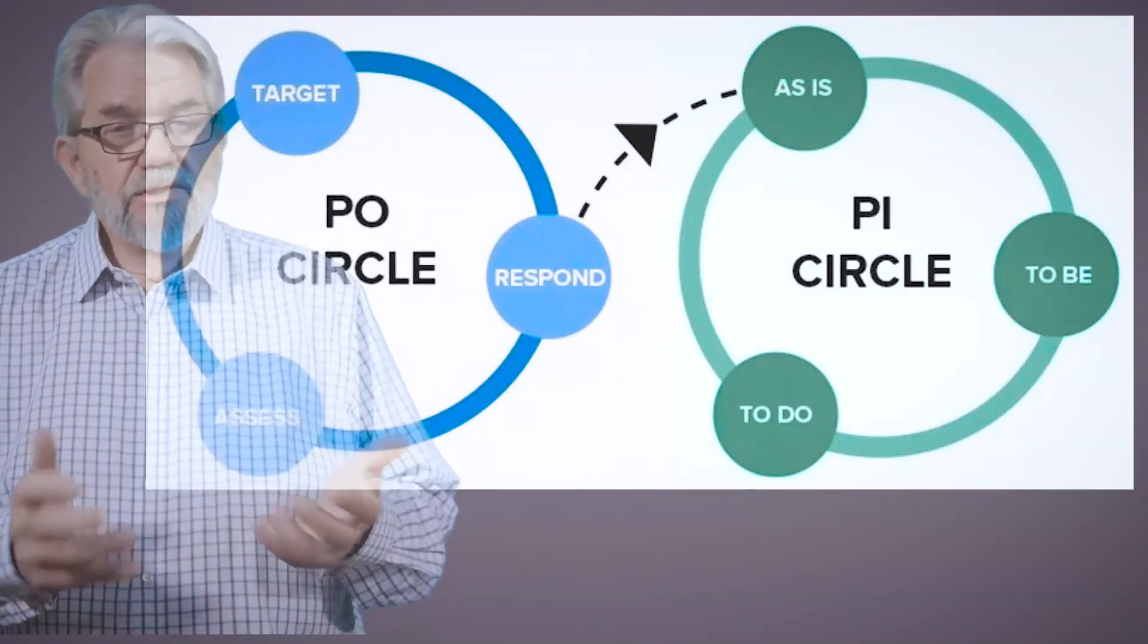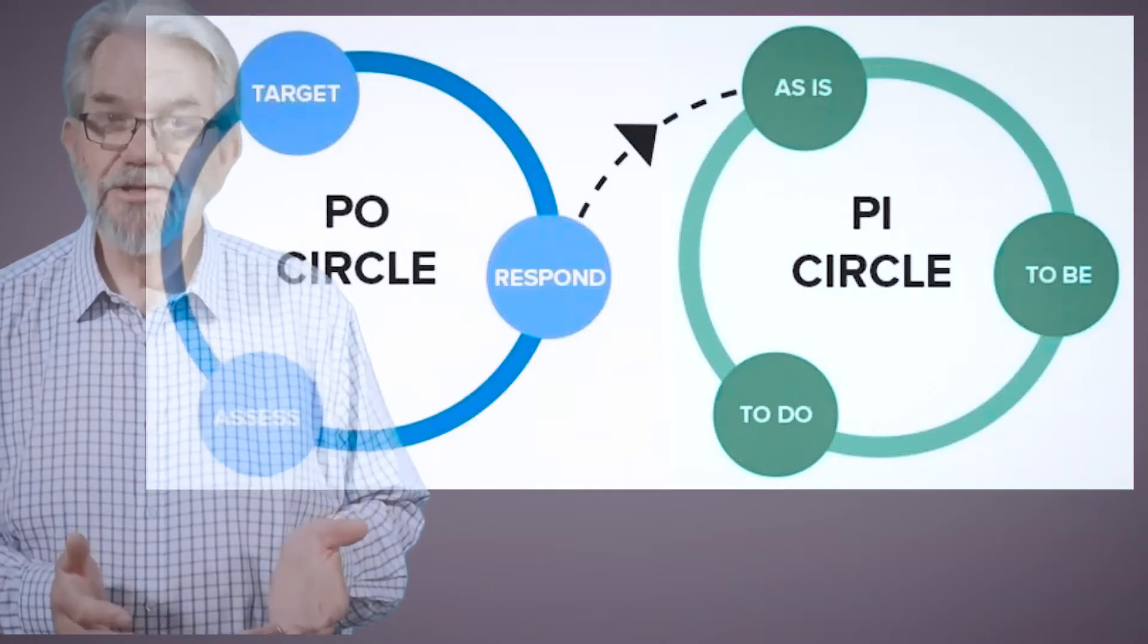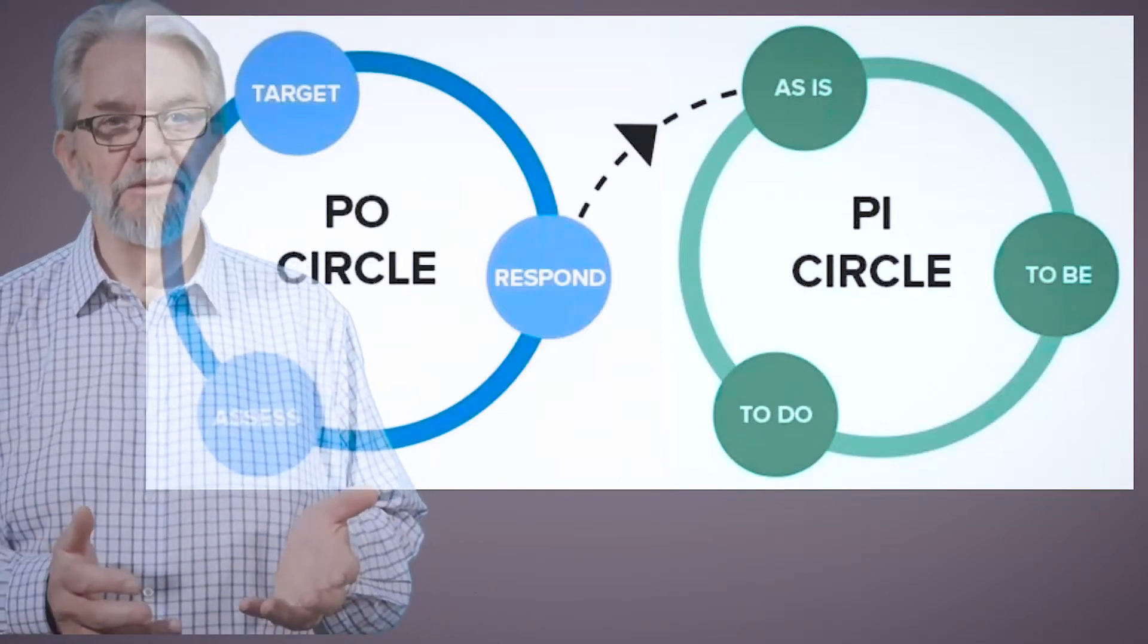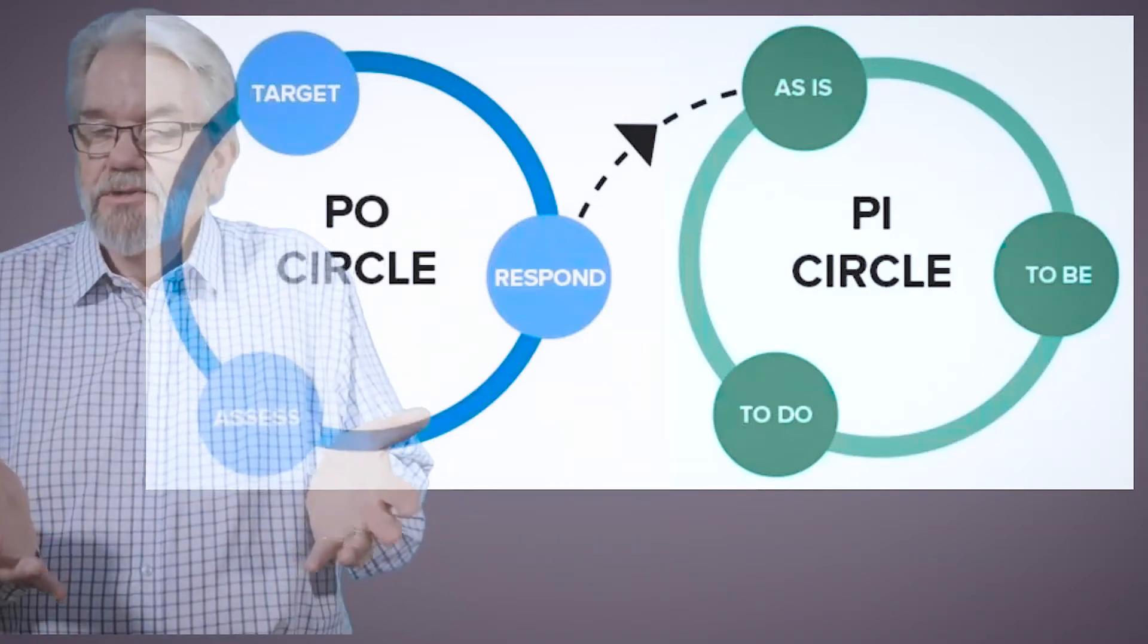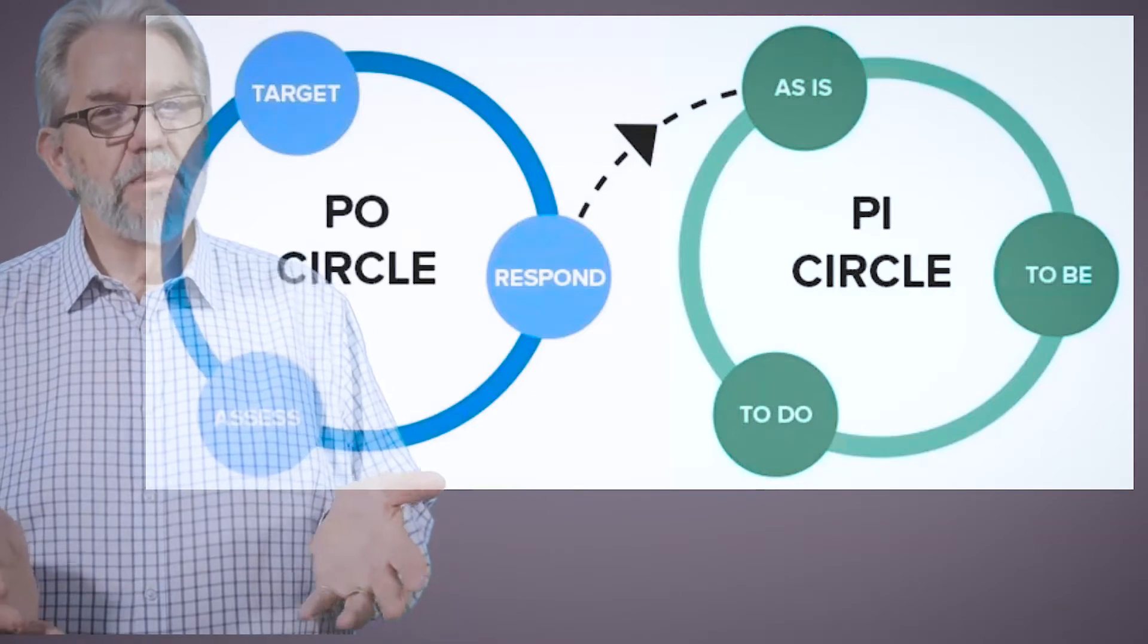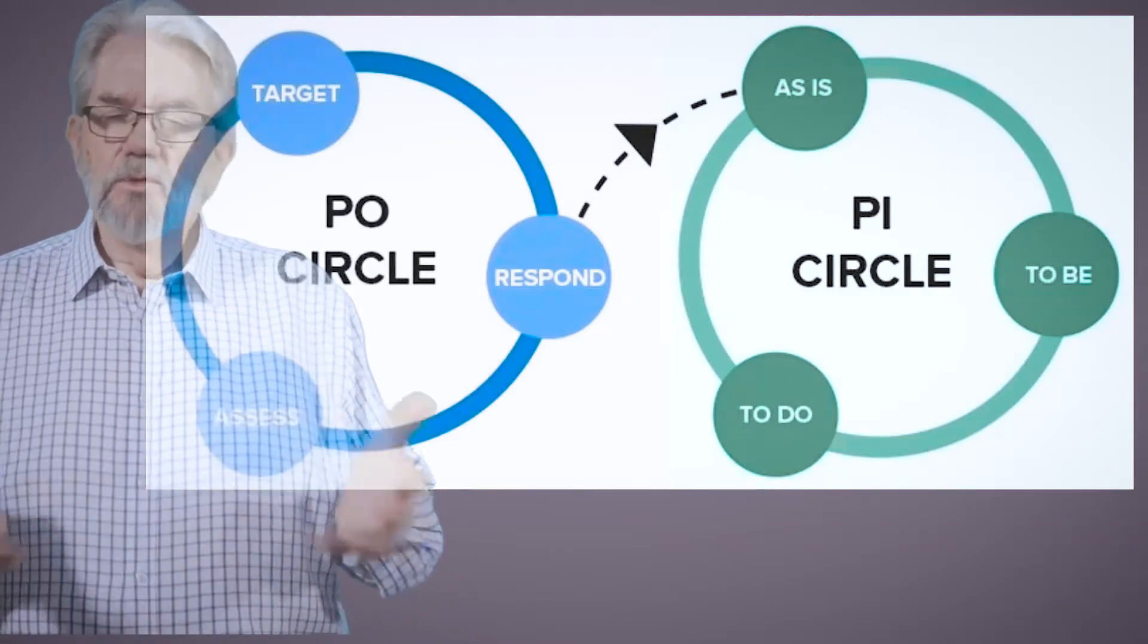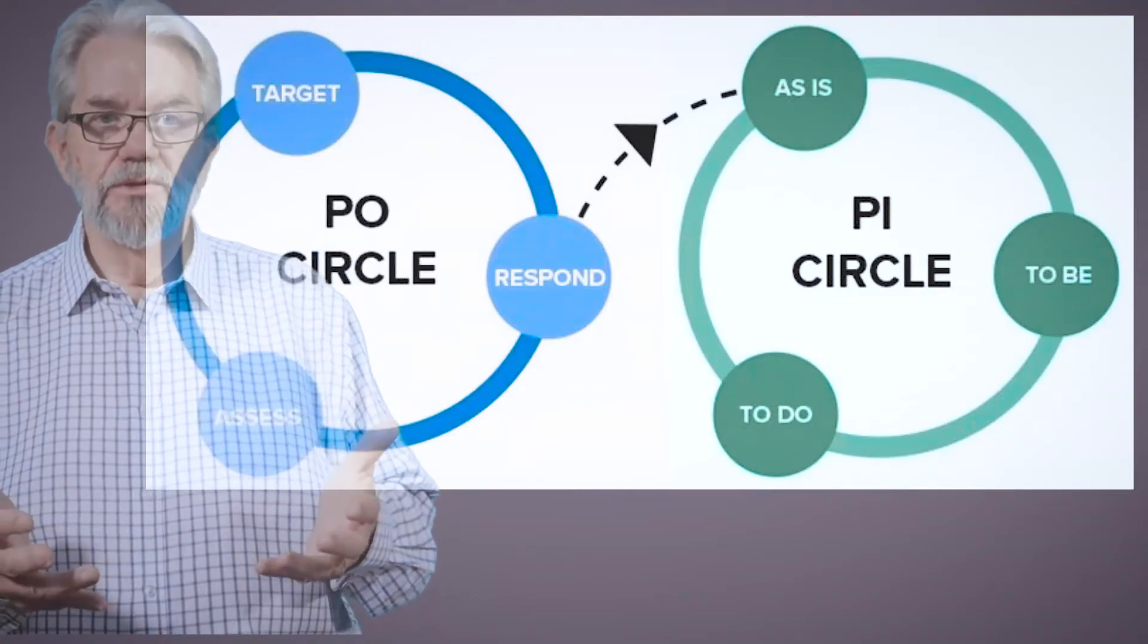So the two circles are just two, and it's a simple diagram. I hope you agree, because I've spent a long time trying to make it as simple as possible, but no simpler. So, because I think that's what process management, one of the things process management can bring to management, is some simplicity, some focus, not more complexity. We don't need that. But I think the two circles help us do that.